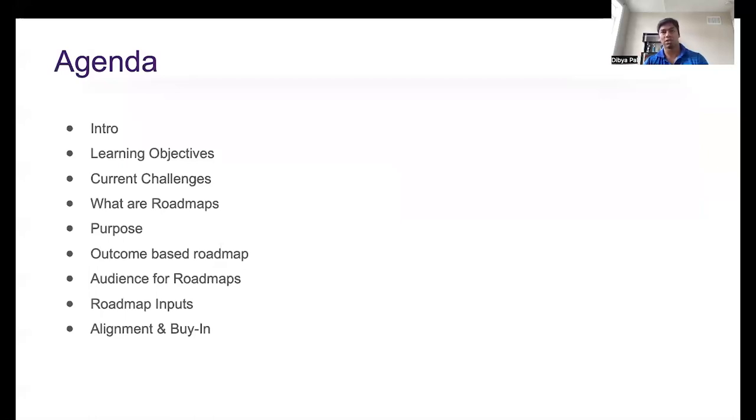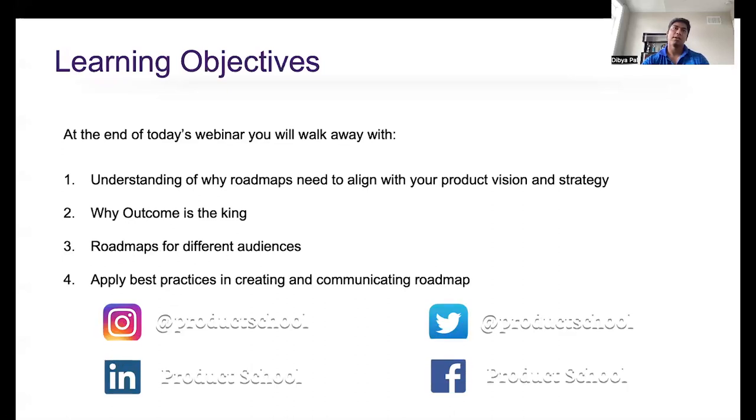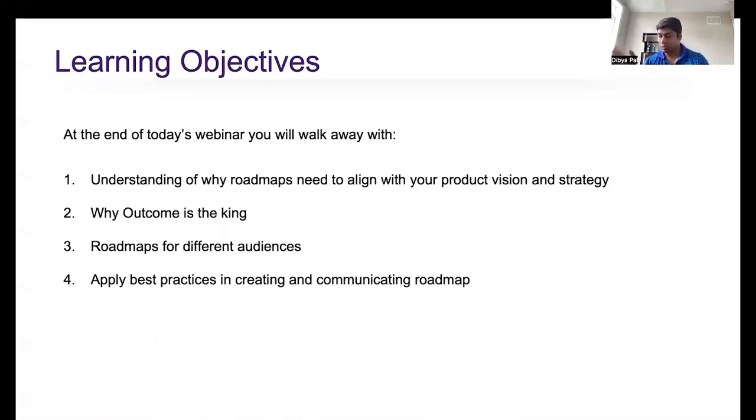So today, we'll focus on what are the challenges with the current roadmaps, what's the roadmap, why do we need outcome-oriented roadmaps, and what are the inputs required to build a roadmap. Takeaways that I would like you to have is a better understanding of the alignment between product roadmap, product vision, and strategy, why focus should be on outcomes, why roadmaps differ based on the audience, and how to apply best practices while creating and sharing a roadmap.